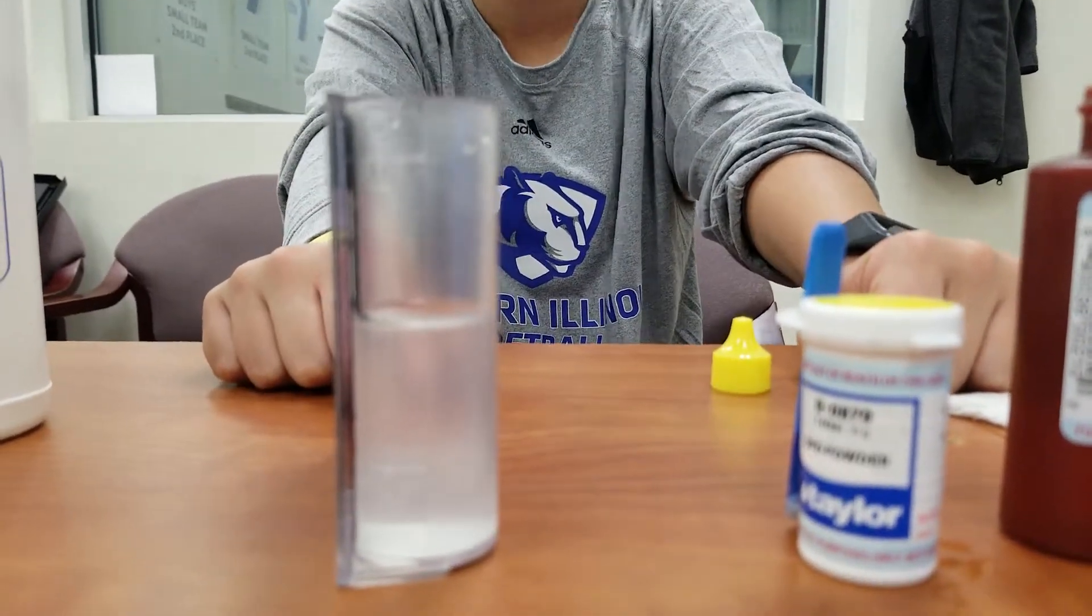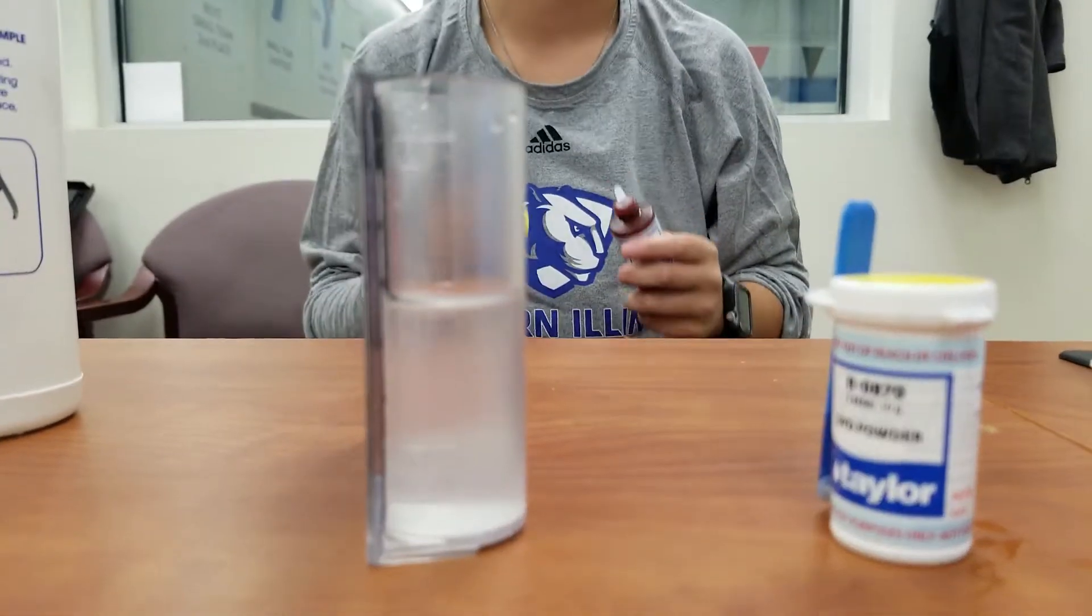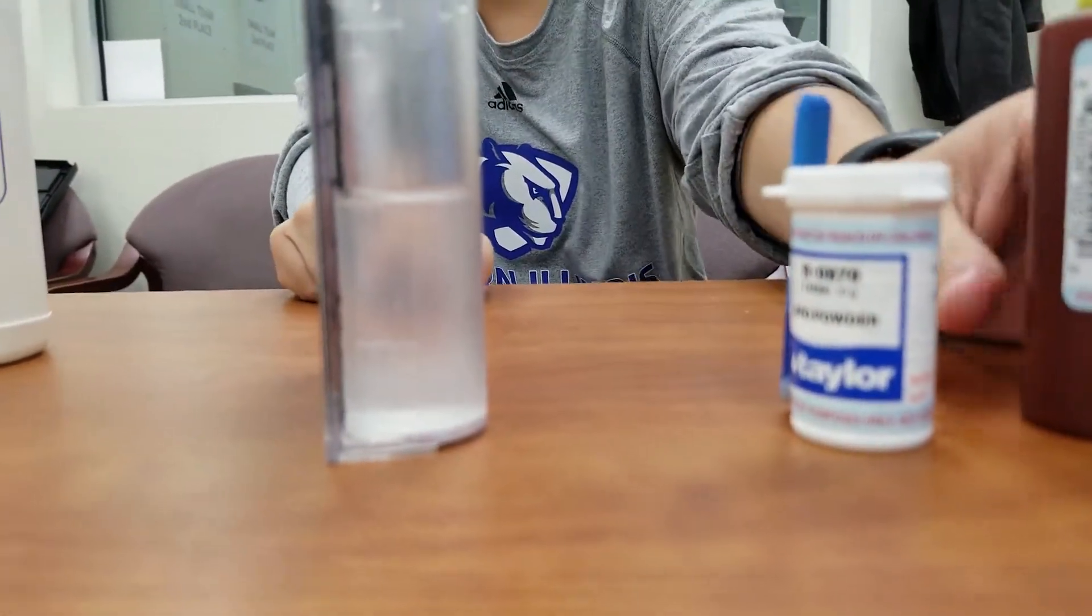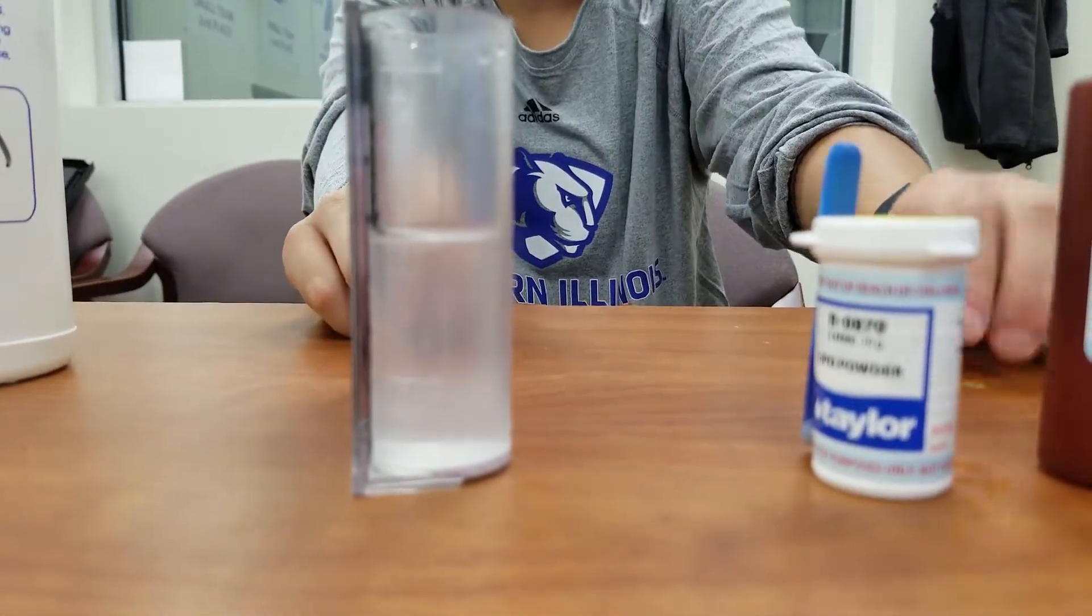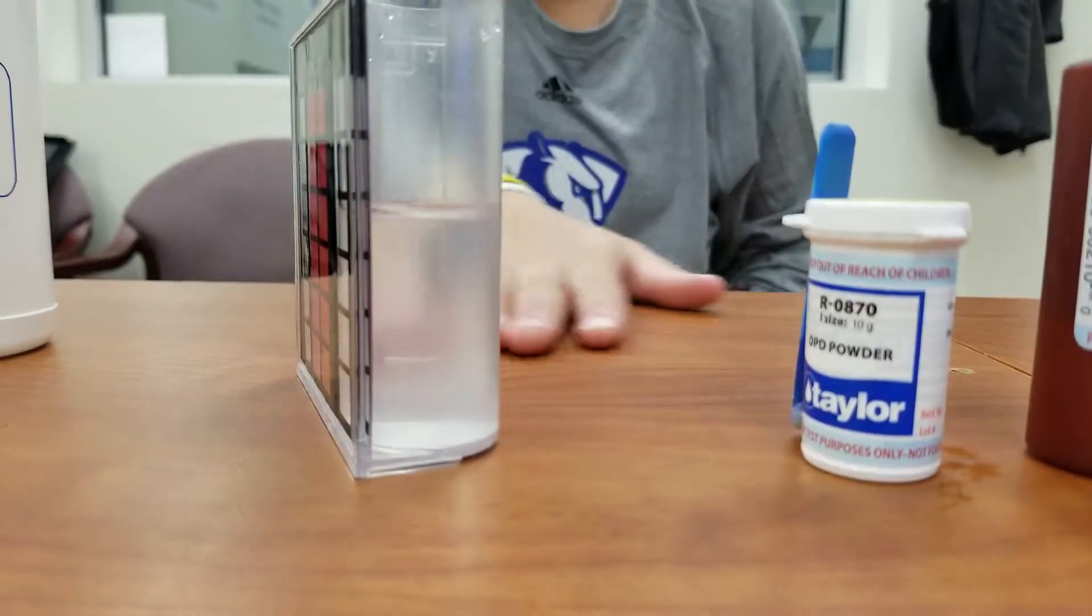What do we multiply that by? 0.2. So that is going to equal three. So that means currently our free chlorine is at 3.0. It's easy to remember, for every five drops it's one full ppm of chlorine.